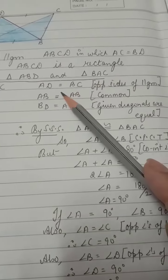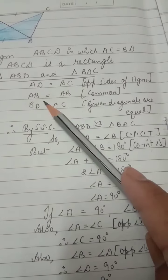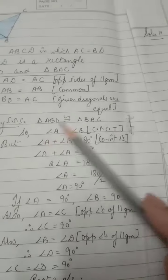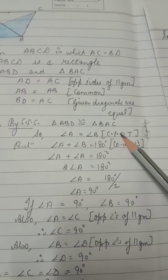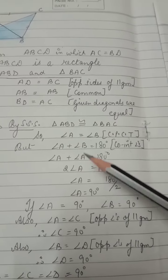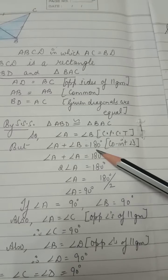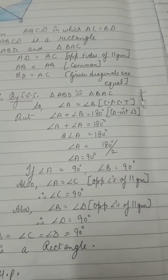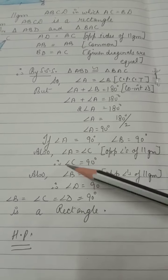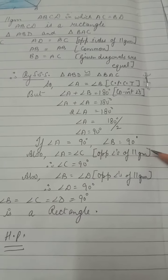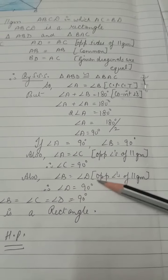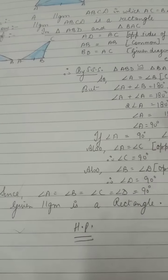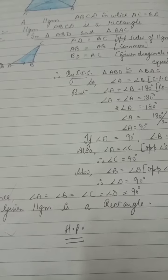In triangles ABD and ABC: AD = BC (opposite sides of parallelogram); AB = AB (common); BD = AC (diagonals are equal, given). By SSS the triangles are congruent, so angle A = angle B by CPCT. Since A and B are co-interior angles, angle A + angle B = 180°, giving each as 90°. Then angle C = 90° and angle D = 90° (opposite angles). All angles are 90°, so the parallelogram is a rectangle. Hence proved.